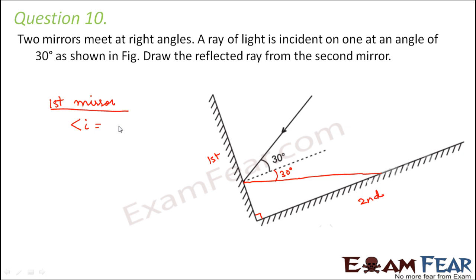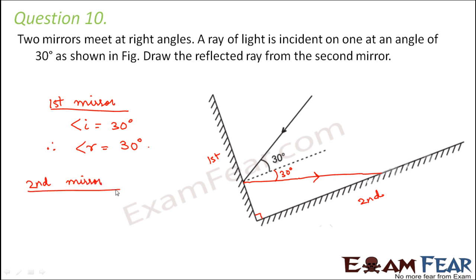For the first mirror, angle of incidence is 30 degrees, therefore angle of reflection is also 30 degrees — that's how we get the reflected ray from the first mirror. This reflected ray from the first mirror is now the incident ray for the second mirror, because it is falling on the second mirror. Now let's draw the normal to the second mirror's surface — this is the normal for the second mirror. This is going to be the angle of incidence for the second mirror.